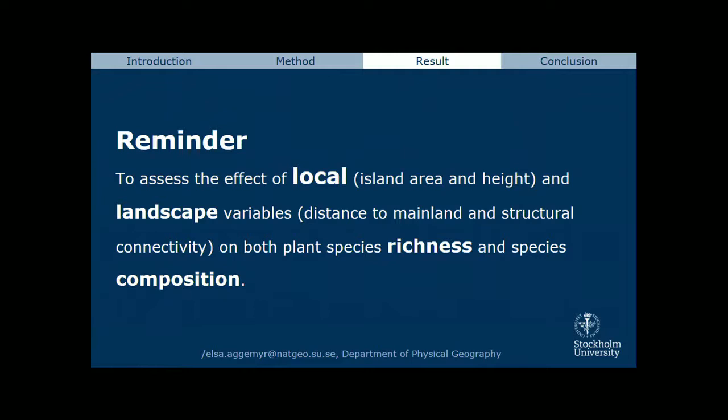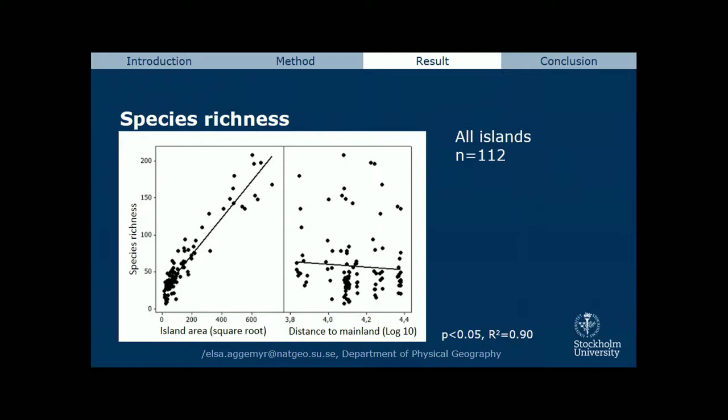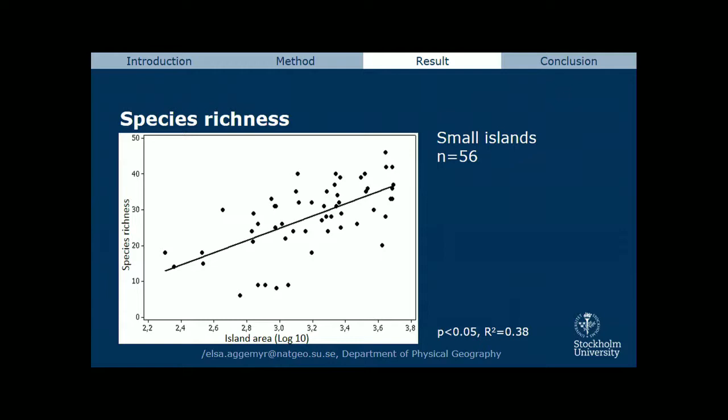Results for species richness: there is a positive relationship between species richness and island area, and a negative relationship between species richness and distance to mainland. For smaller islands — less than 0.5 hectares — only island area was significant; nothing else explained species richness on those islands.